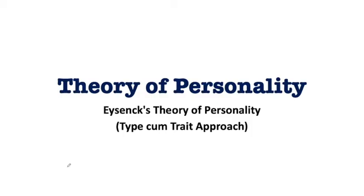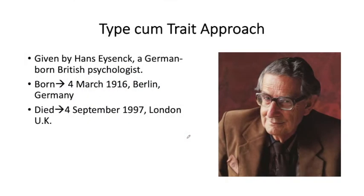Hello everyone, hope you all are doing very good. Welcome back. Today I'm here with another theory of personality — that is Eysenck's theory of personality. This comes under the type-cum-trait approach. This theory is given by Hans Eysenck, a German-born British psychologist, born on 4th March 1916 in Berlin, Germany, and died on 4th September 1997 in London, UK.